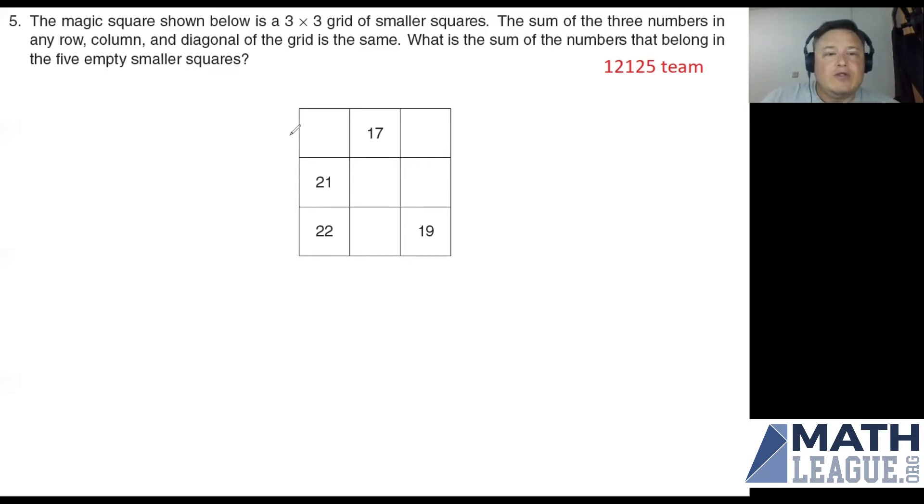Now if we ignore what goes in the top left, then what we have left over is 21 plus 22 equals 17 plus this thing. So let's write that down. 21 plus 22 equals 17 plus x, whatever that number is. So 21 plus 22 is 43. And if I subtract 17 from both sides, I get my x. 43 minus 17, of course, this is 26.